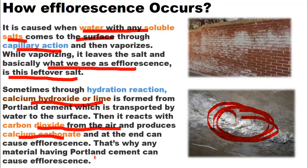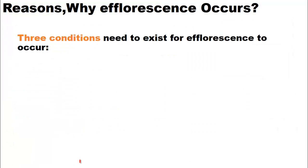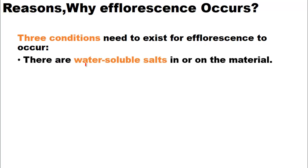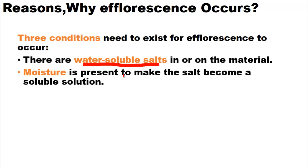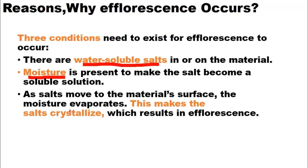That's why any material containing Portland cement can cause efflorescence. There are three conditions that need to exist for efflorescence to occur. First, there must be water-soluble salts present in the construction material. Second, moisture must be present to make those salts become a soluble solution. Third, as salts move to the material surface, the moisture evaporates, causing the salts to crystallize — which results in efflorescence.